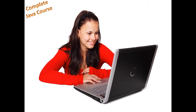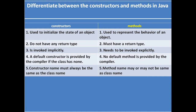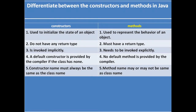Hello friends, welcome to my complete Java course. In today's video lecture we are going to learn the difference between constructors and methods. Number one: a constructor is used to initialize the state of an object. Whatever variables we define in the class, that is called the state of the object. A method is used to represent the behavior of an object.